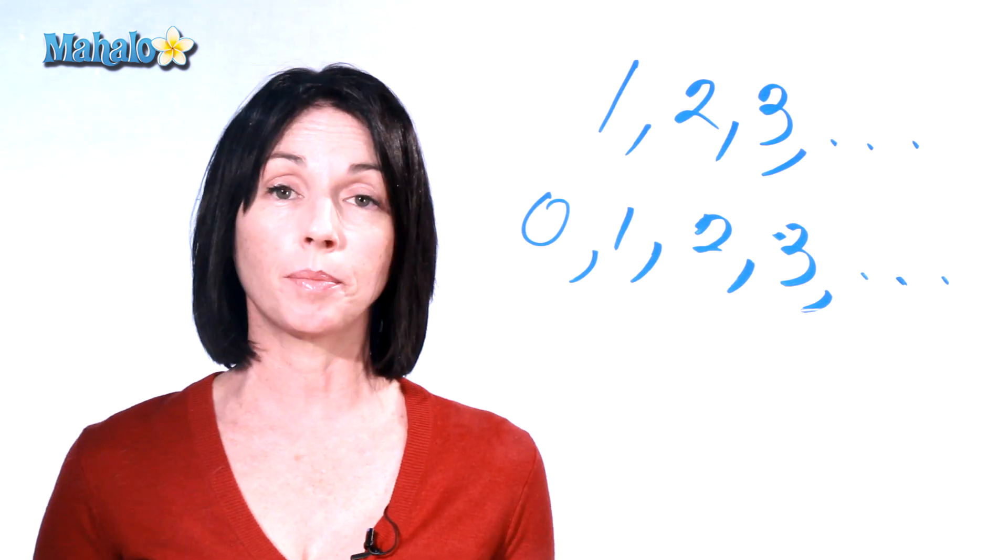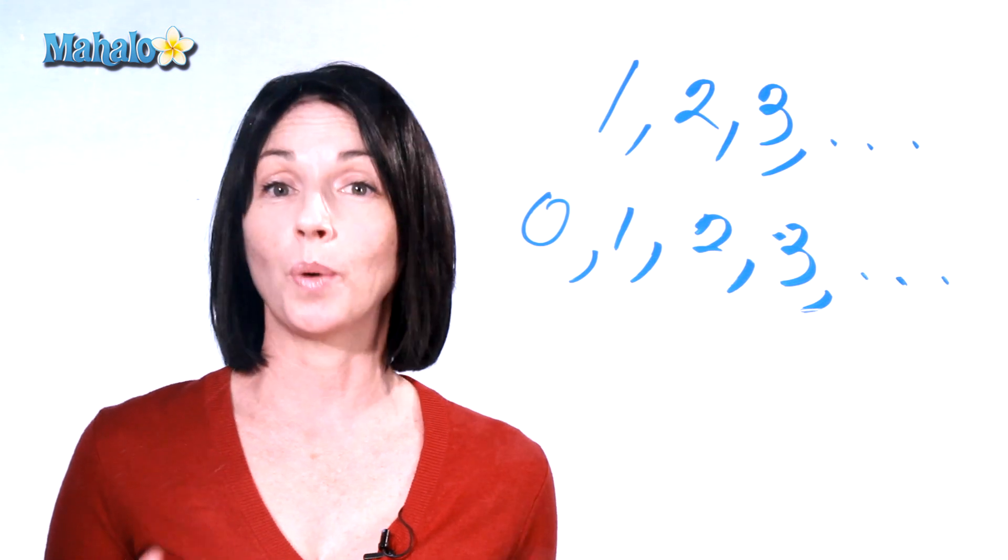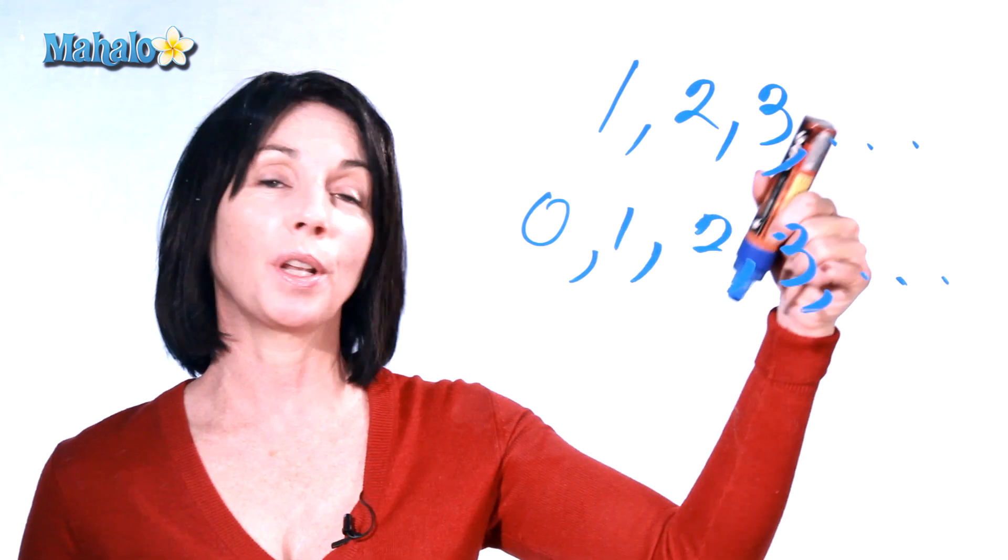The counting numbers are also sometimes called the natural numbers and those are the ones you count with. One, two, three, four, five, etc.